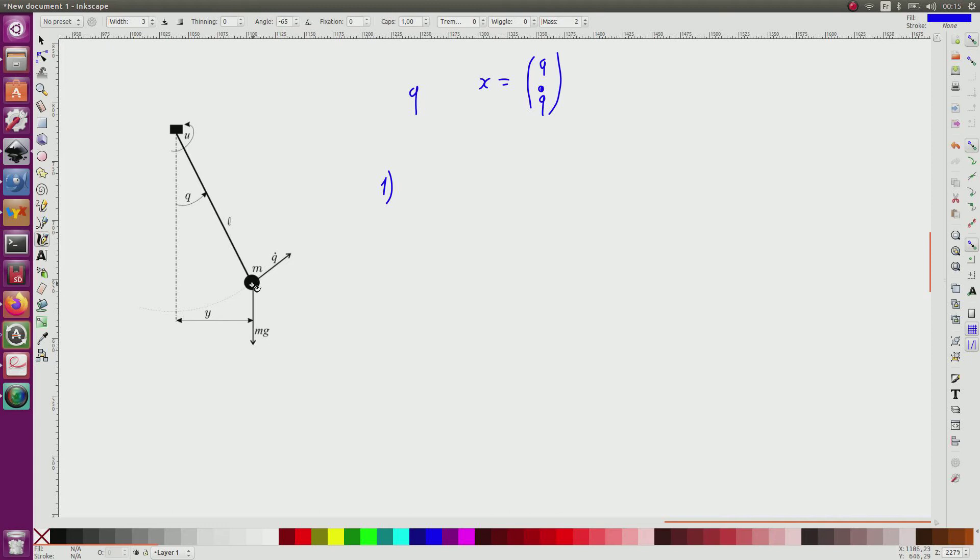As a consequence, it will exert a momentum on the pendulum which will make it turn. So here it will be negative since in the figure when Q is positive, then the force in the torque is on this direction. This is why I can write minus.